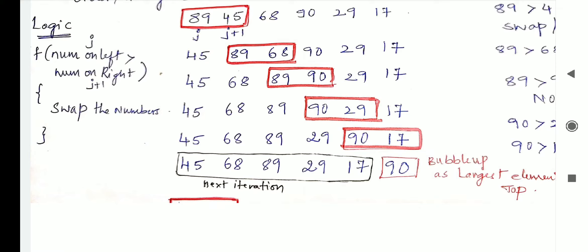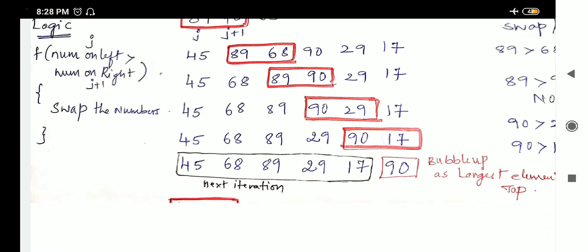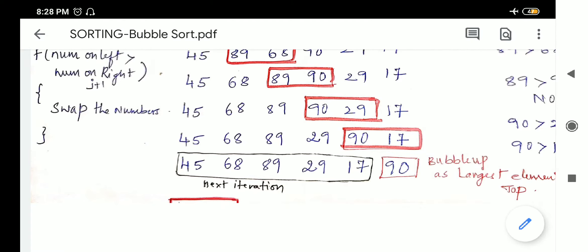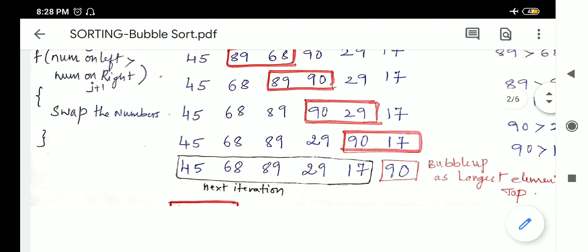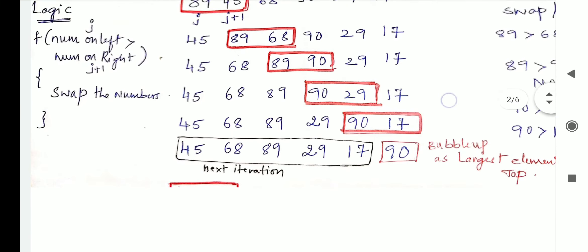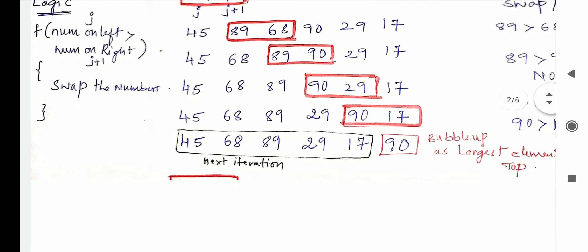Similarly, 90 and 17: 90 is greater than 17, so again swap the elements. In this way we have compared from left to right. I have started scanning from left to right and reached up to 17. You can count the comparisons in the red boxes: 1, 2, 3, 4, and 5 — so 5 comparisons. In the first scan, what we are doing is getting the highest element bubbled up. That is, 90 has come up as the largest element and taken its place at the end.